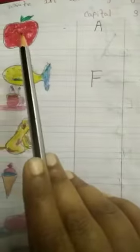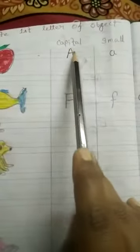First one is apple. A for apple. This one is capital A. This one is small a.